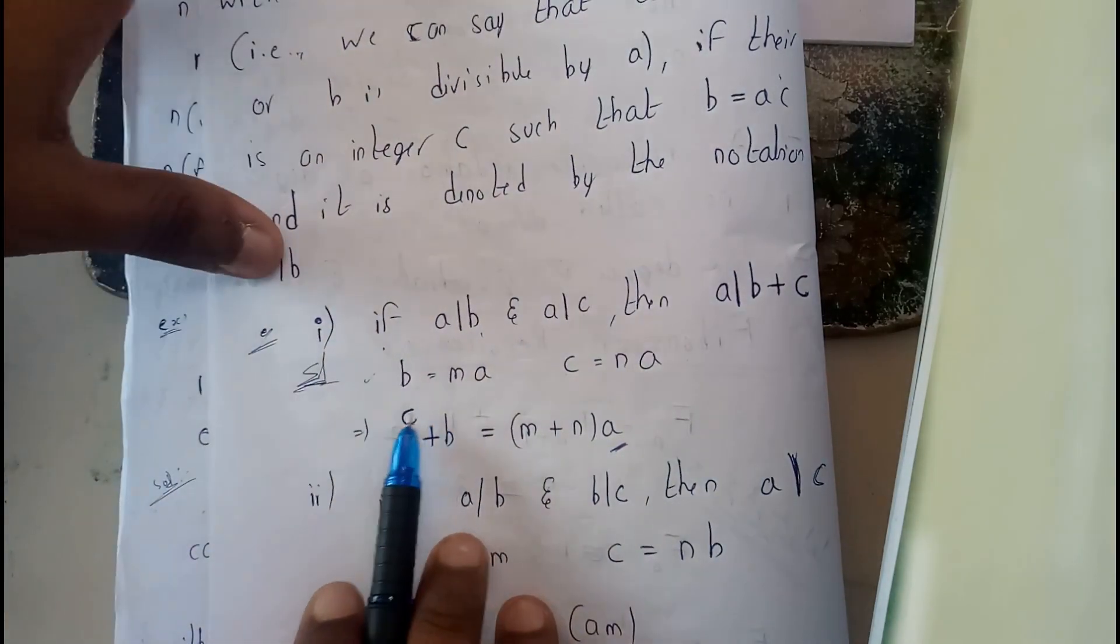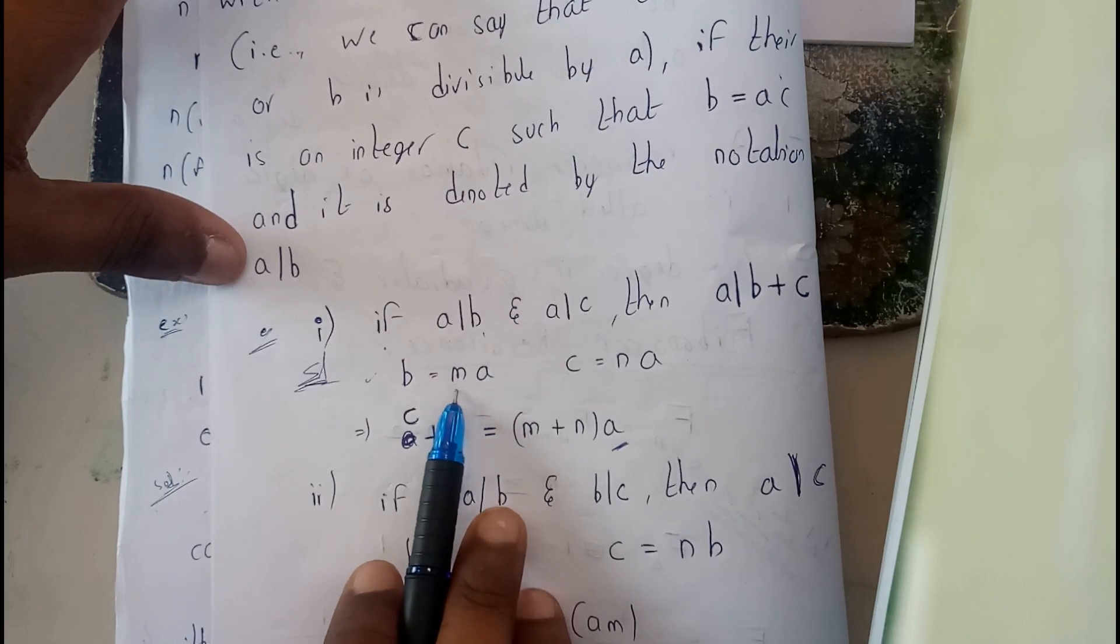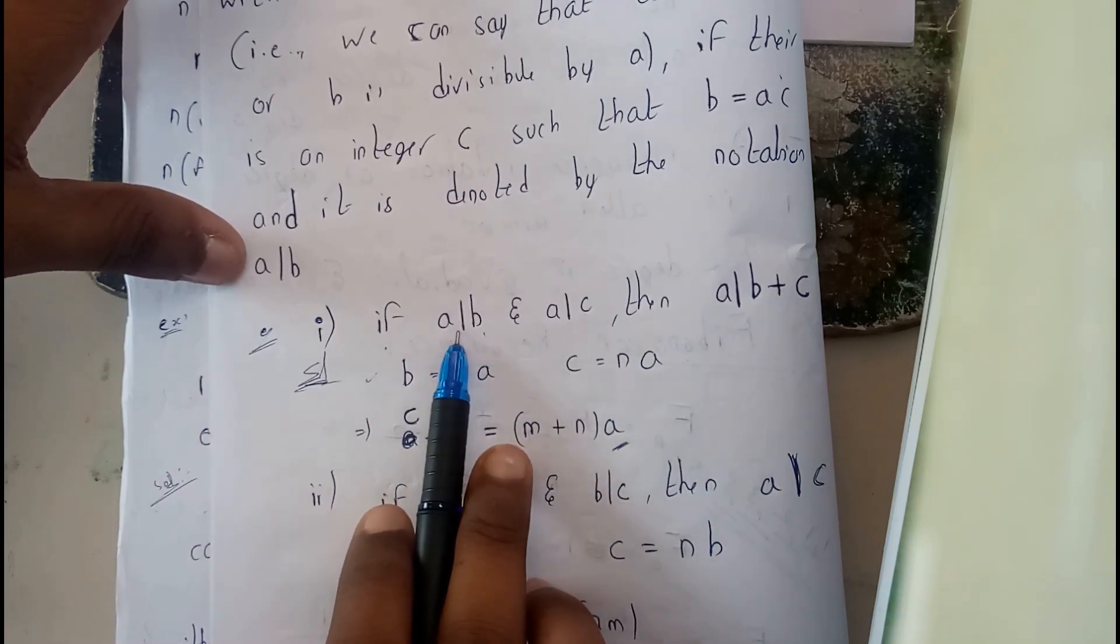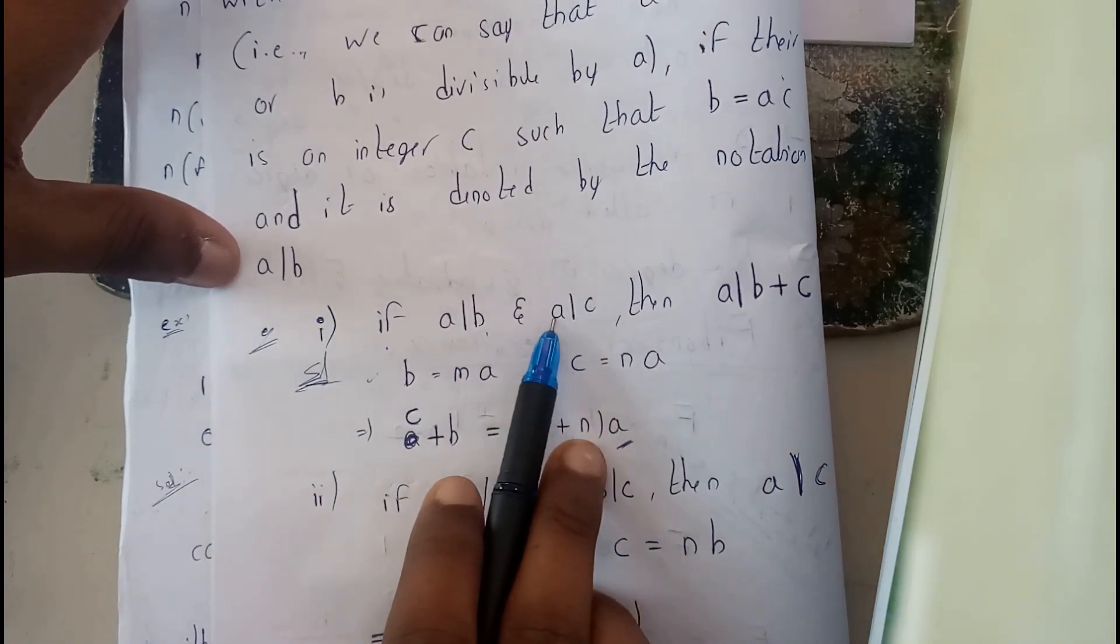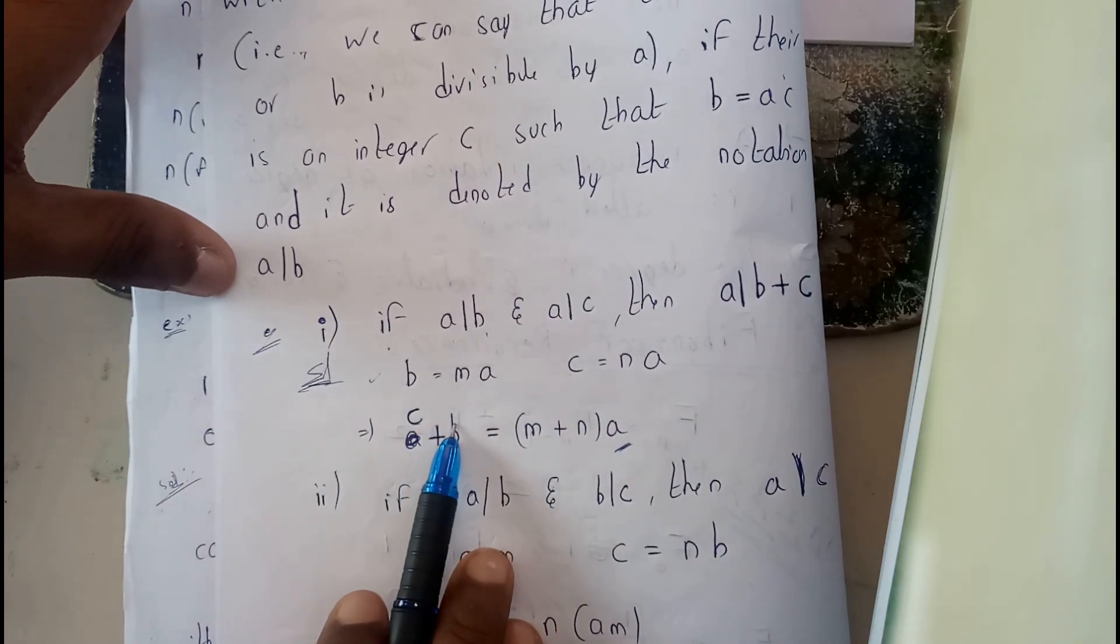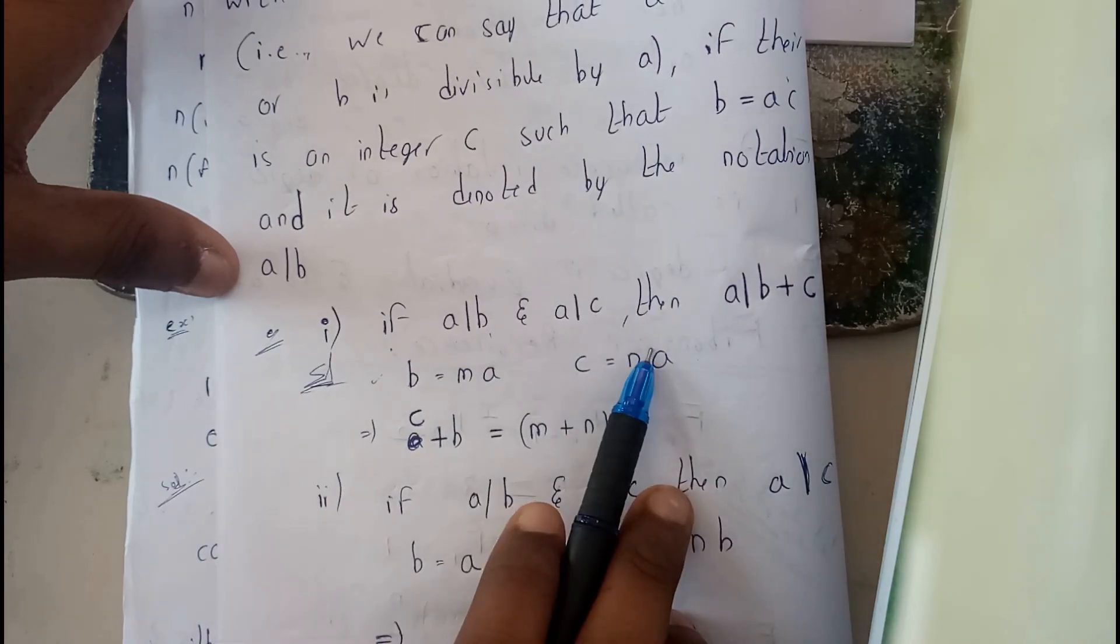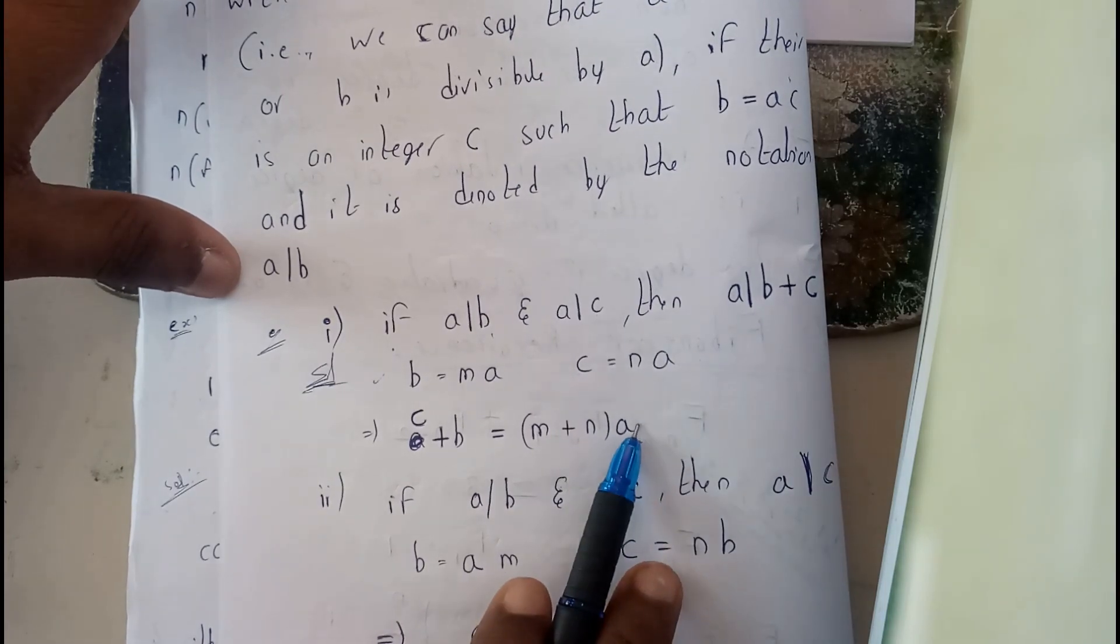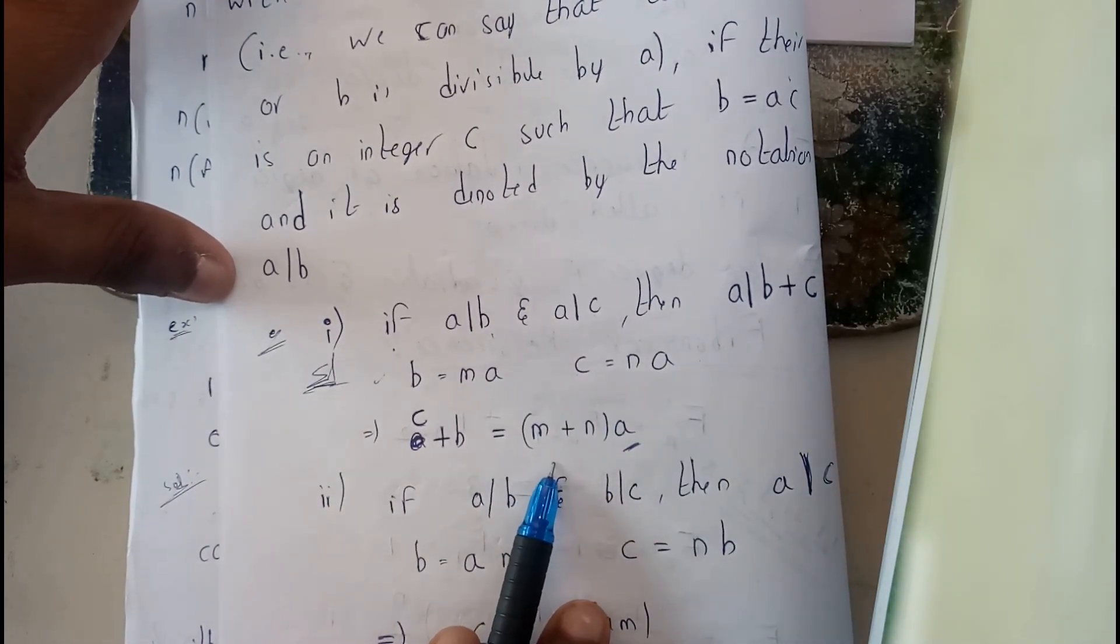Let's check it. Here I'll be assuming b equals m times a, and c equals n times a. Therefore, b plus c equals (m plus n) times a. Hence we can write this as a divides (b plus c). I think you got a small idea.